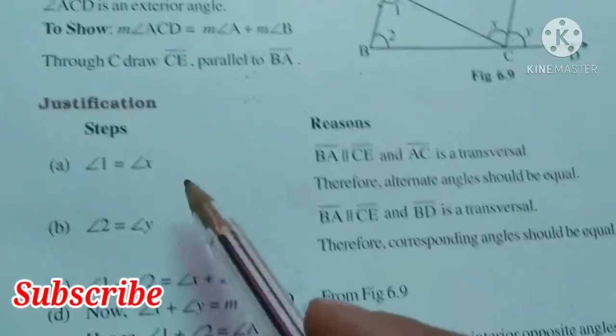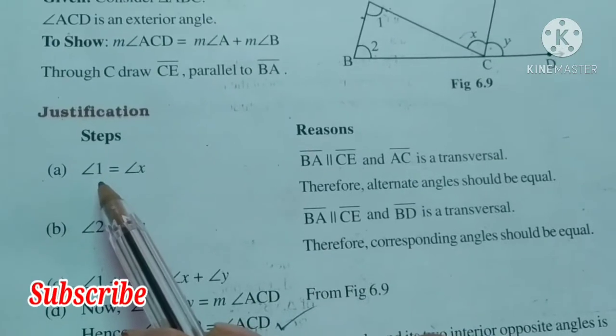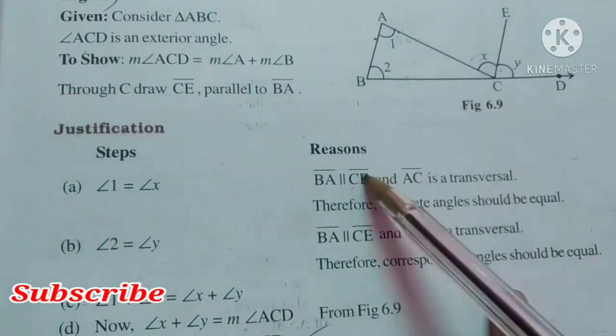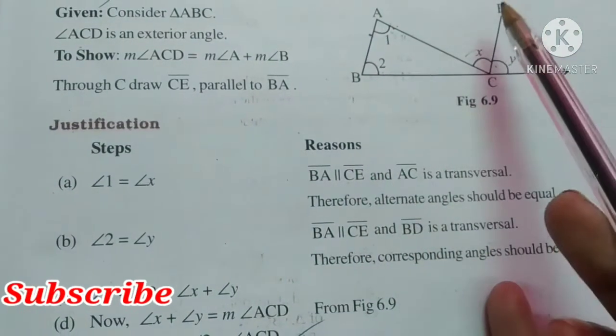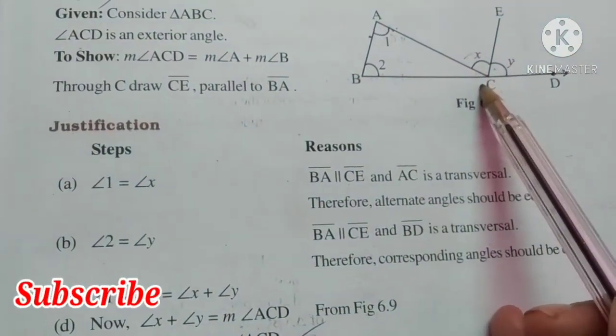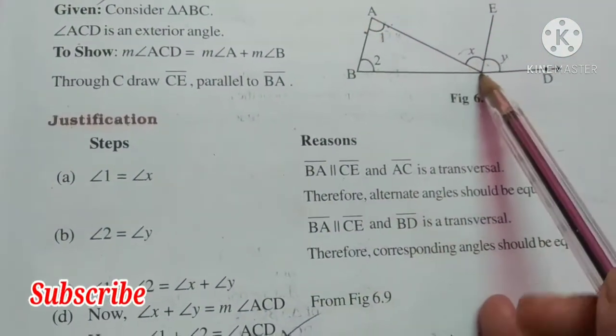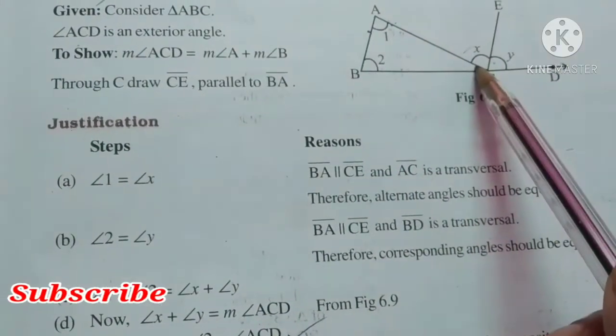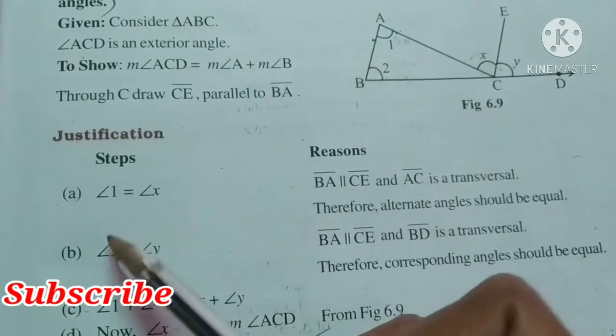Now what are the steps? First part: angle 1 is equal to X. What is the reason? Here BA is parallel to CE and AC is a transversal. So these are alternate interior angles that should be equal.